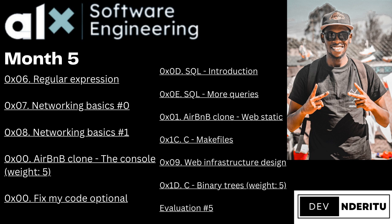The major project in Sprint Two is creating the AirBnB clone — the console. You're going to create the terminal version of the AirBnB clone, which you'll be using later on. This is a project that spans throughout the entire ALX program, split into modules, and this one has a weight of five.